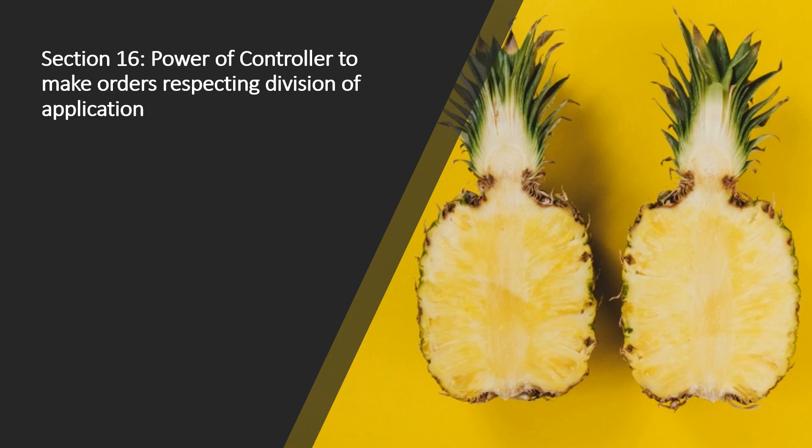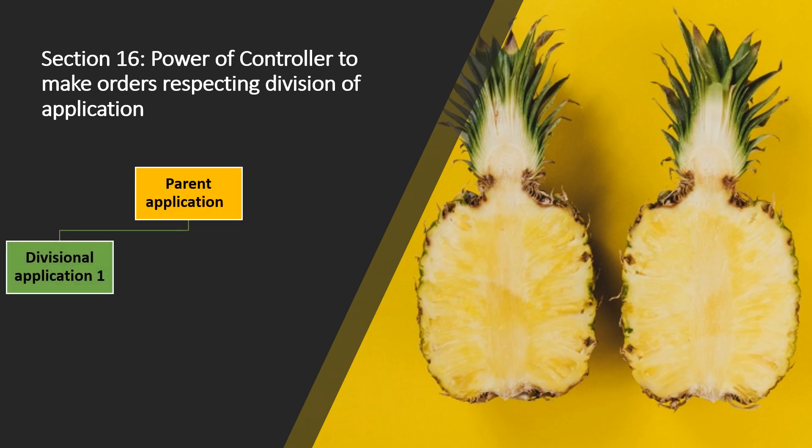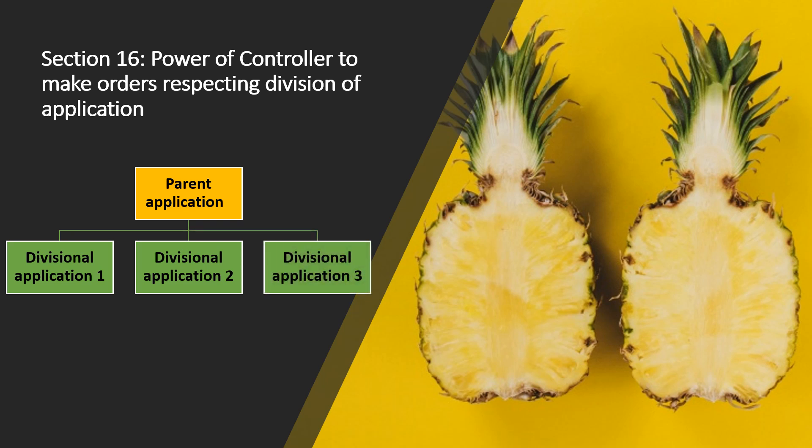If the controller feels that one application contains more than one invention — that is, your patent application lacks unity of invention — he may direct the applicant to split the application and file a divisional application. One application shall be split into two or more patent applications. At the time of drafting the divisional application, it has to be made sure that the claims of both applications do not overlap with each other, the main application is amended accordingly, and reference to the main application shall be made in the divisional application.